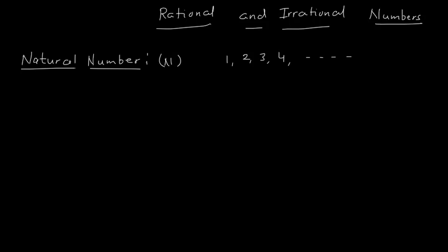When we add 0 to these natural numbers, we get a set of numbers called whole numbers. Whole numbers are denoted with the symbol W, and here we start with 0: 0, 1, 2, 3, 4 and so on. This is the whole number set. Whole numbers include all the natural numbers.